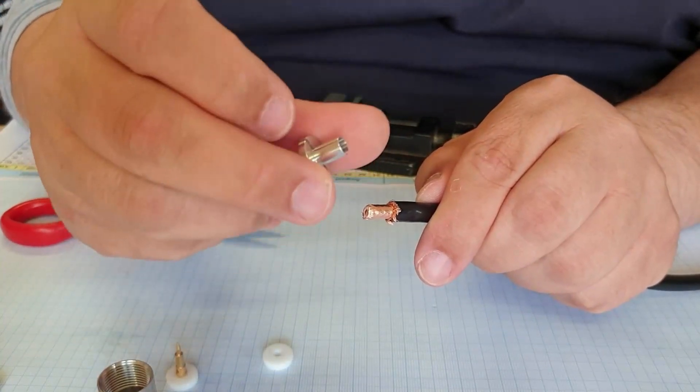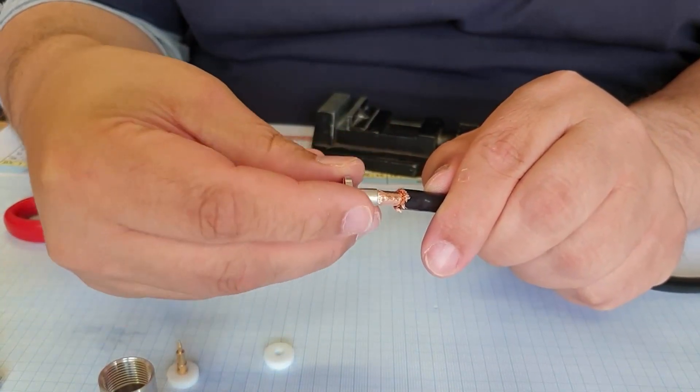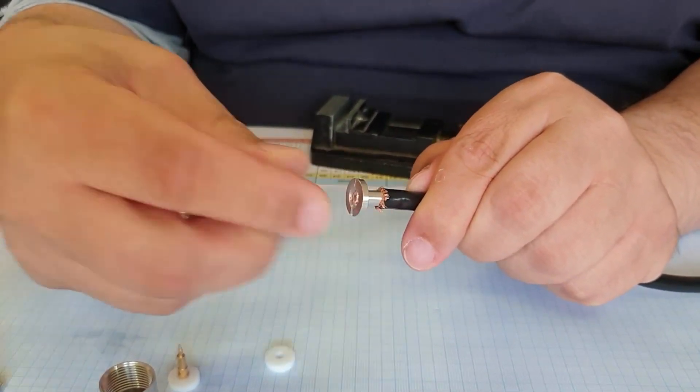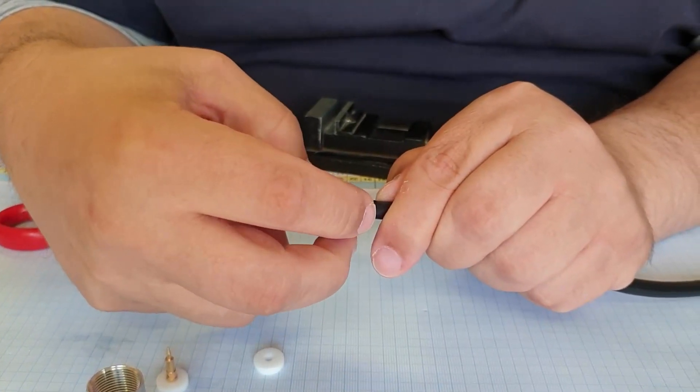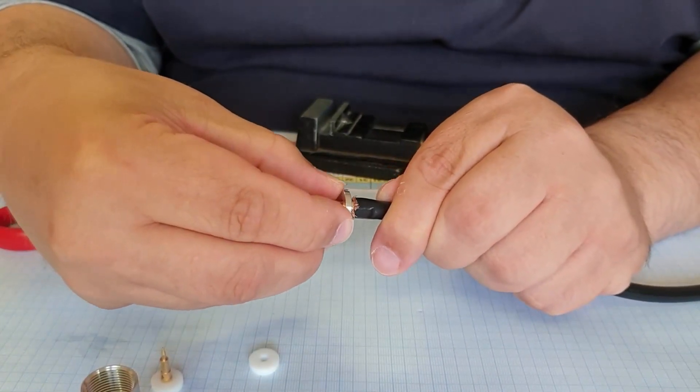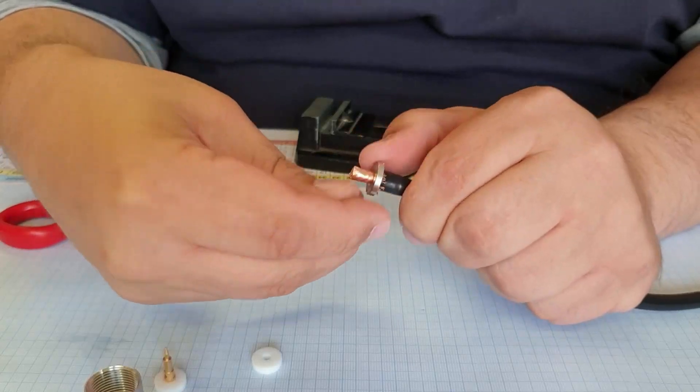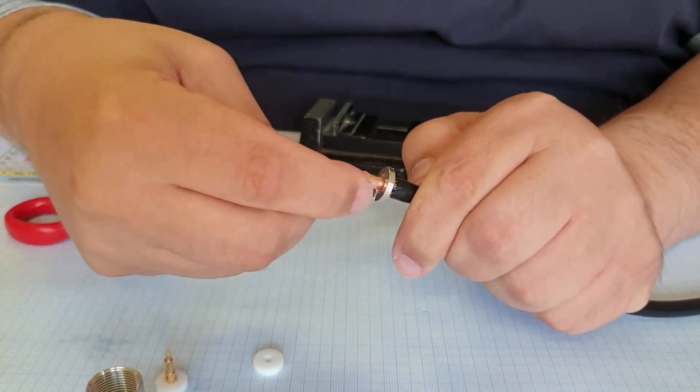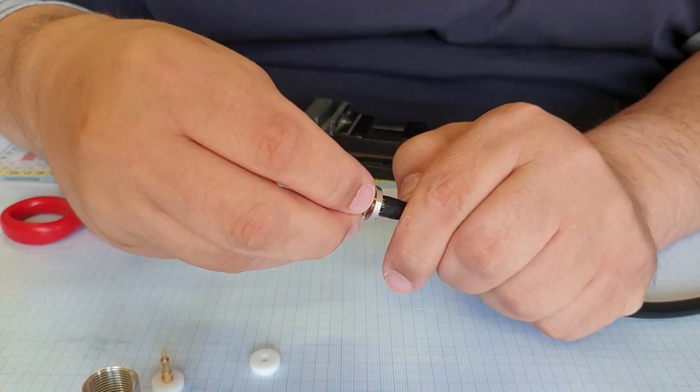So now you can see that we have the foil, copper foil, and the braid. We take now the clamp and put it between the braid and the foil like this. So now we have a perfect connection between the ground and the connector.